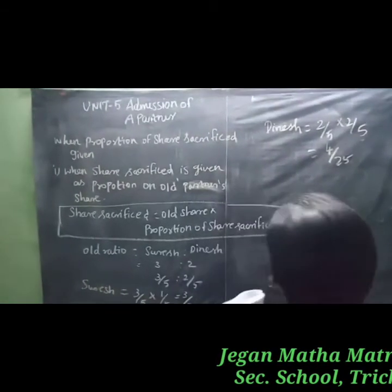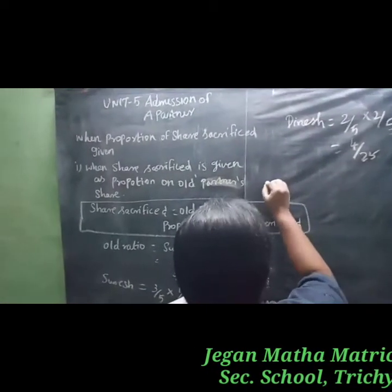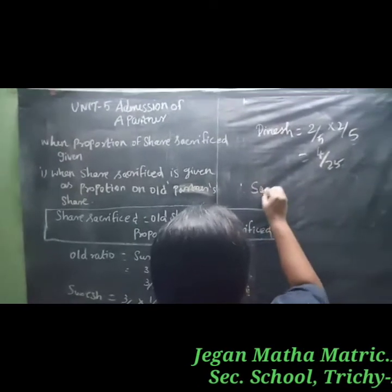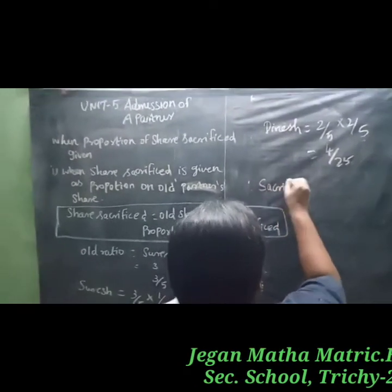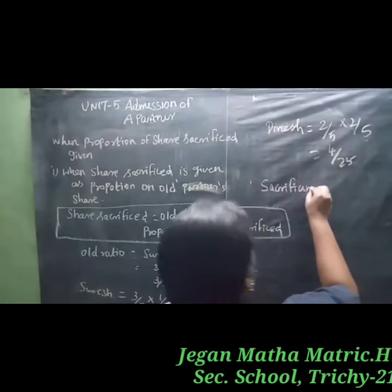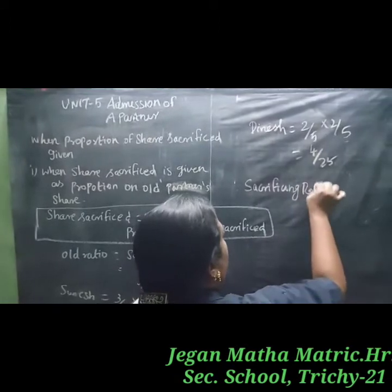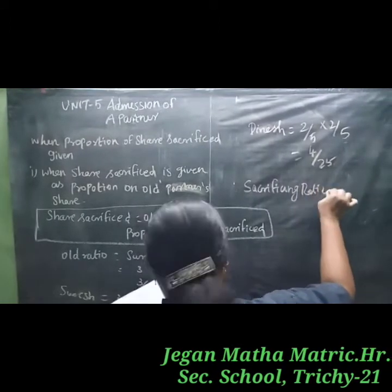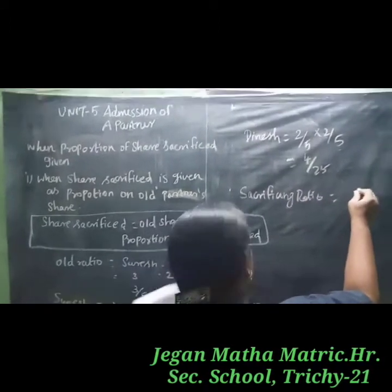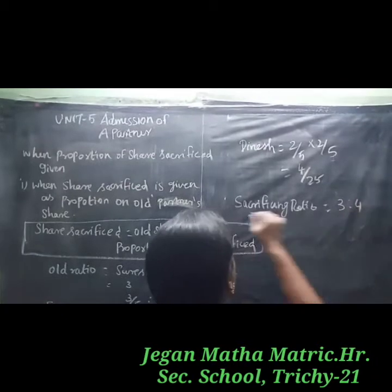Therefore, the sacrificing ratio is 3 to 4.